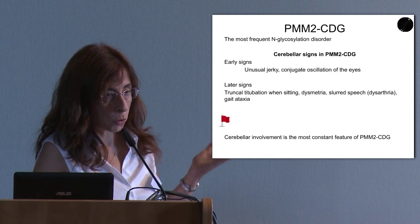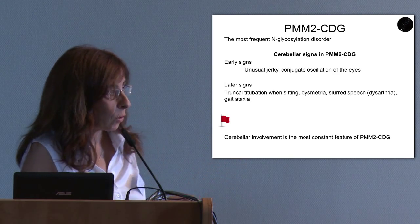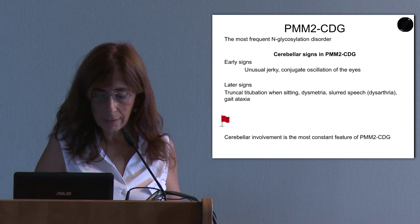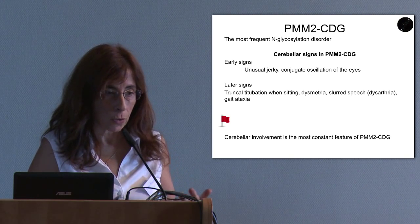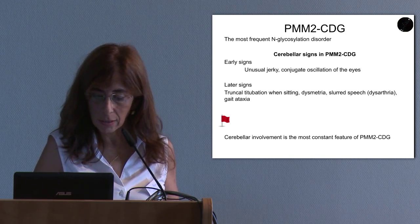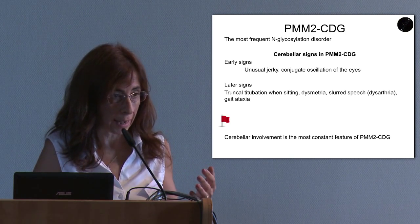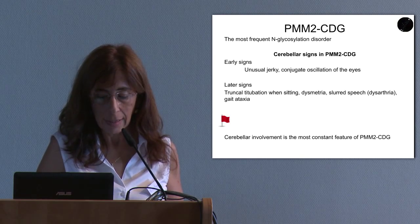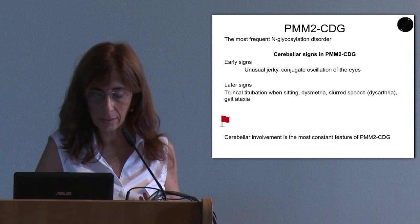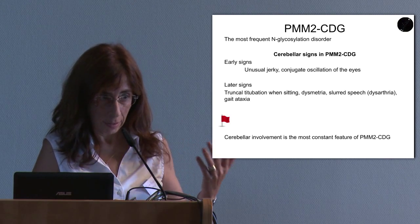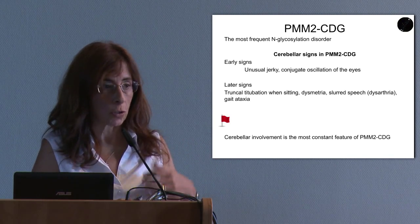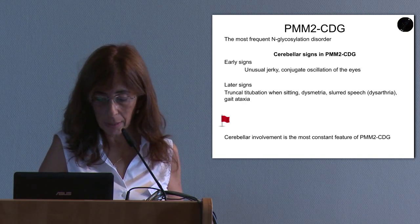PMM2-CDG is the most common N-glycosylation disorder, and cerebellar signs occur very early — usually as unusual jerky conjugate oscillations of the eyes in very young children. Later signs include truncal titubation when sitting and walking, gait ataxia, and also dysarthric or telegrammatic speech.